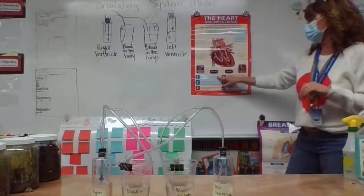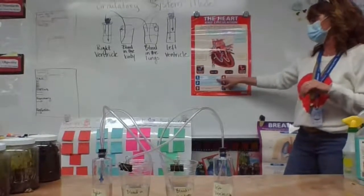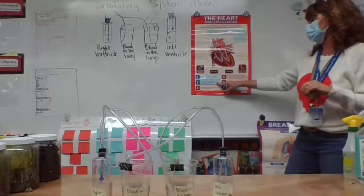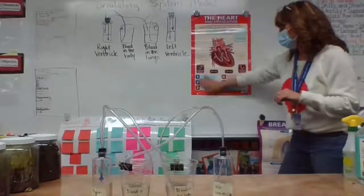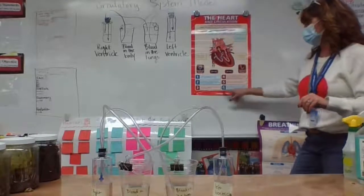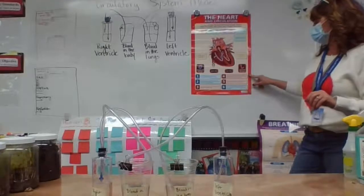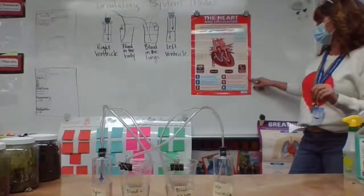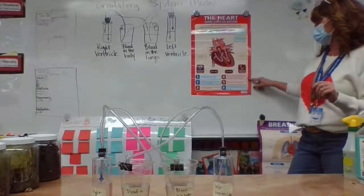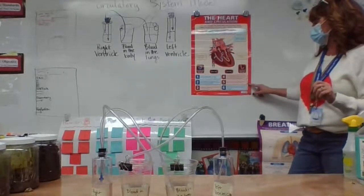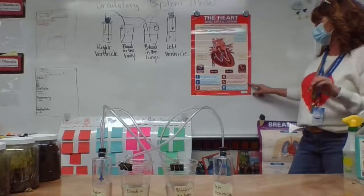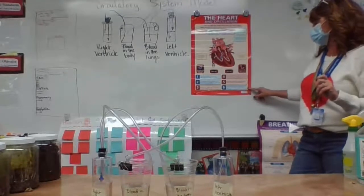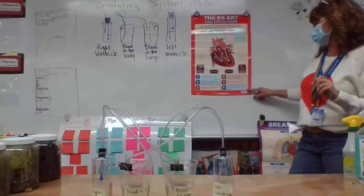The bottom right chamber of the heart contracts, pushing blood containing carbon dioxide through an artery. The blood travels to the lungs where the carbon dioxide is exchanged for oxygen from inhaled air. The blood travels from the lungs back to the heart through the veins. The top left chamber contracts, pushing blood to the bottom left chamber, which then pushes blood out through an artery to deliver oxygen and energy around the body.